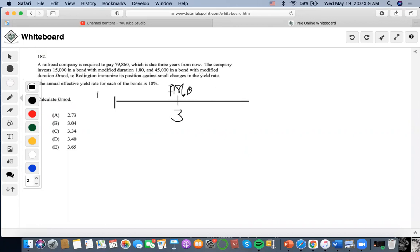Well, the first thing with immunization is that we want to find the present value. Conventionally, whenever we want to find present value, we always start with the liabilities. So I'm going to do $79,860 times 1.10 to the negative 3, and then get $60,000.